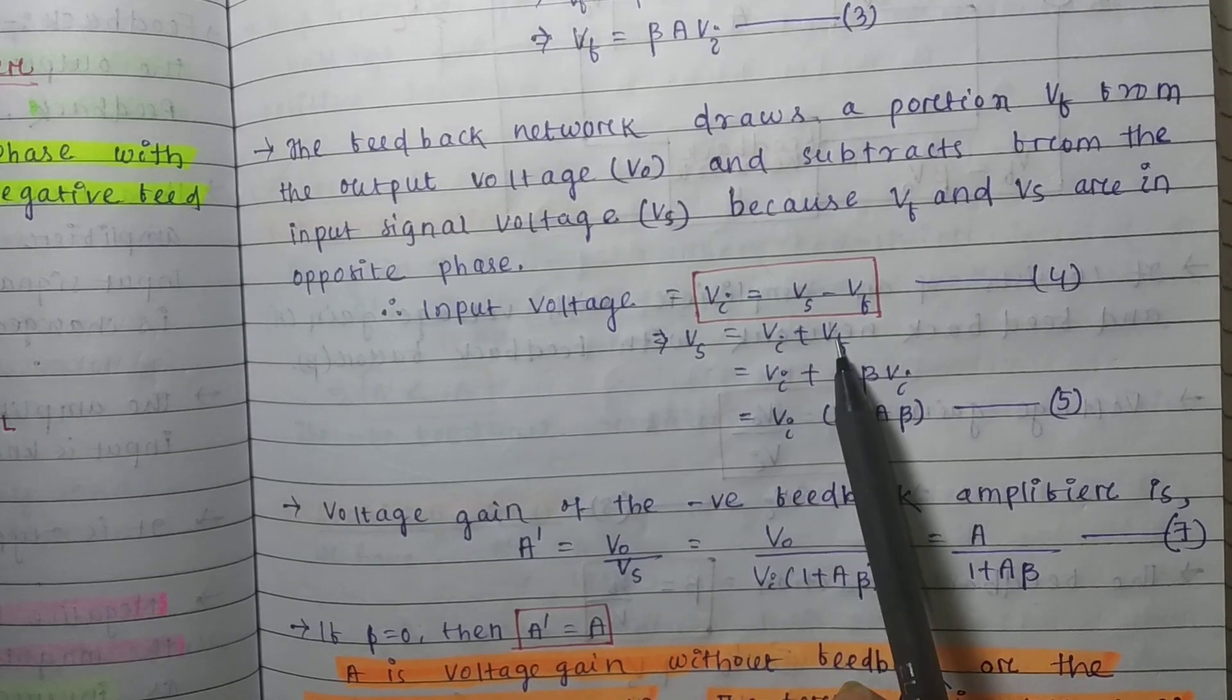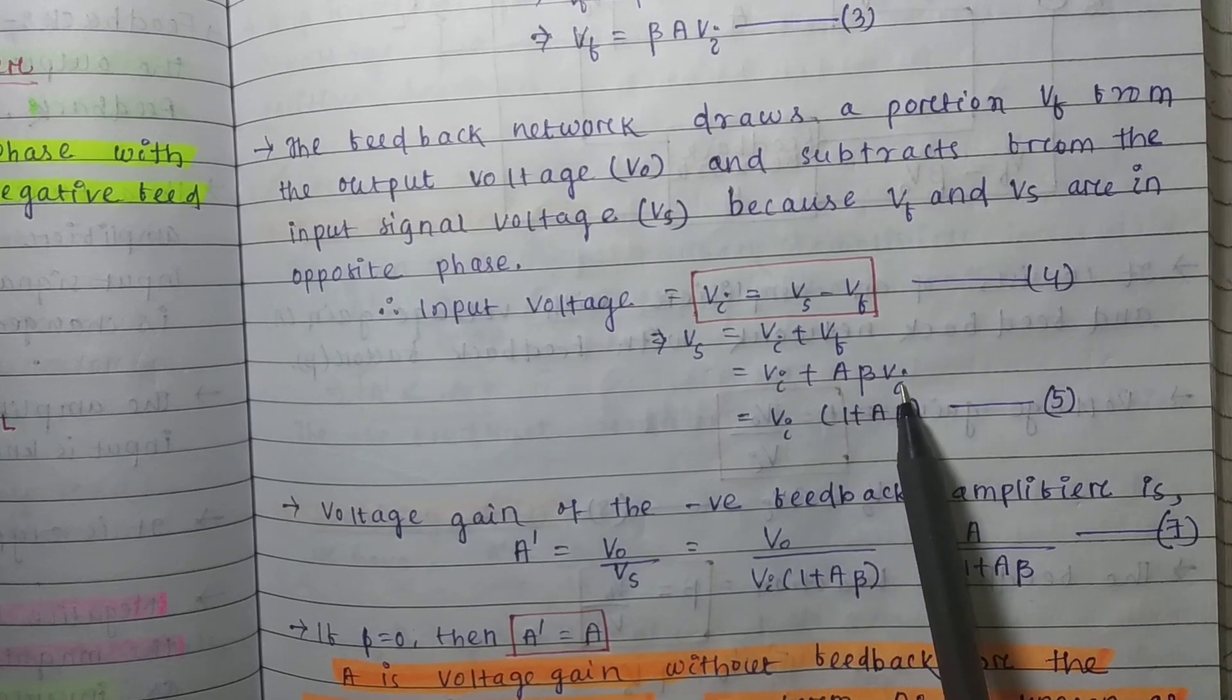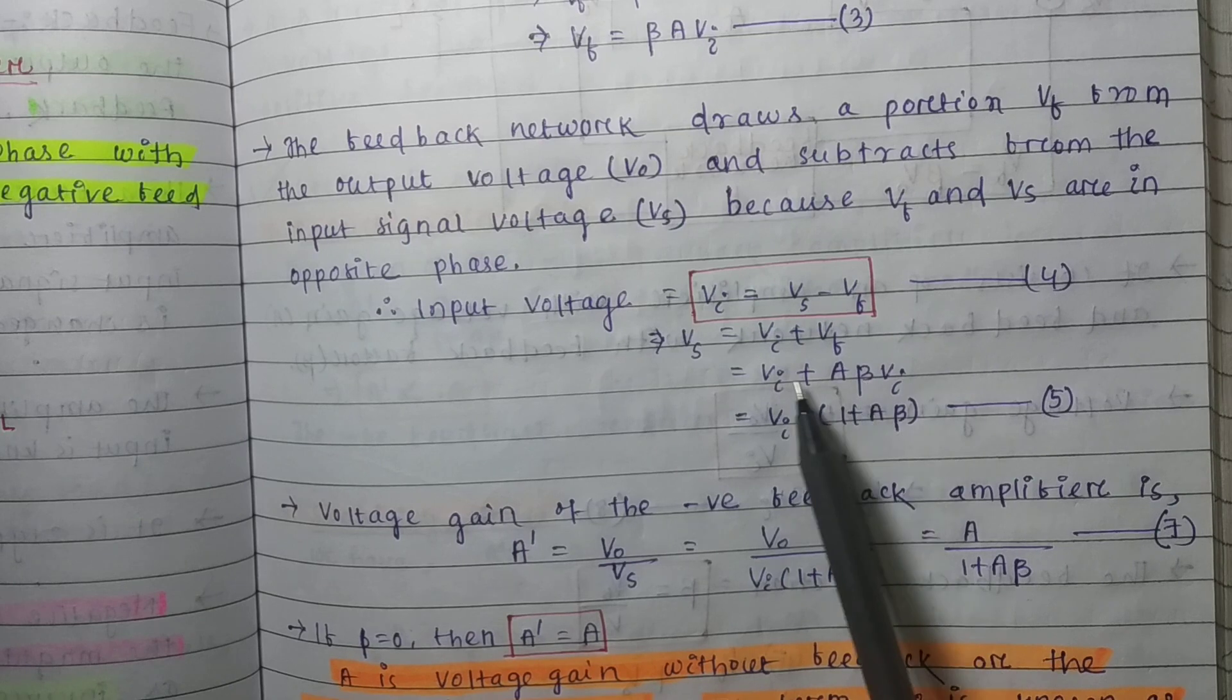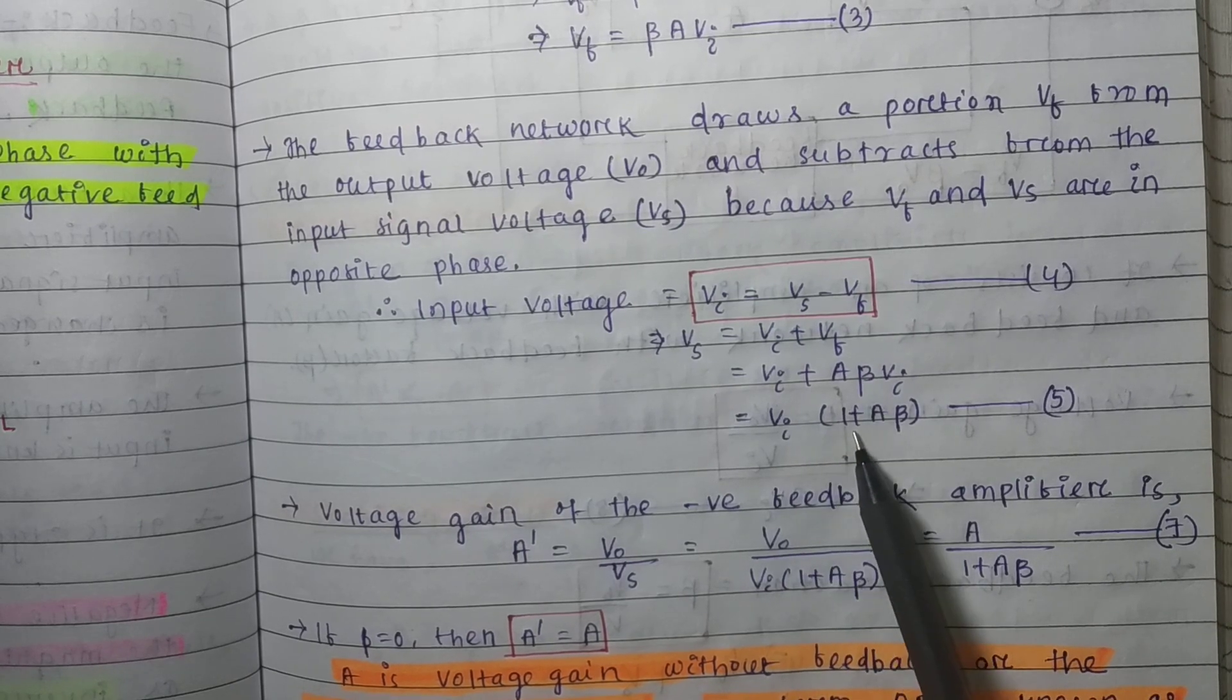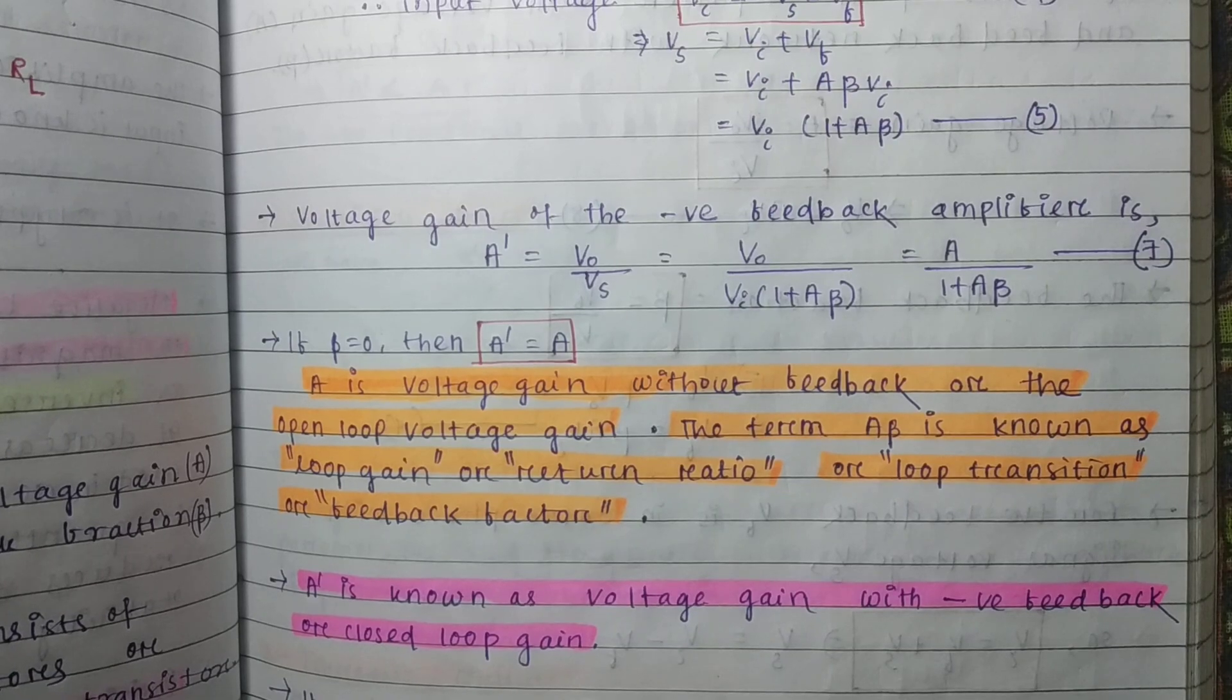Vs equals Vi plus Vf. Instead of Vf we put A beta Vi. Taking common Vi, we get 1 plus A beta.